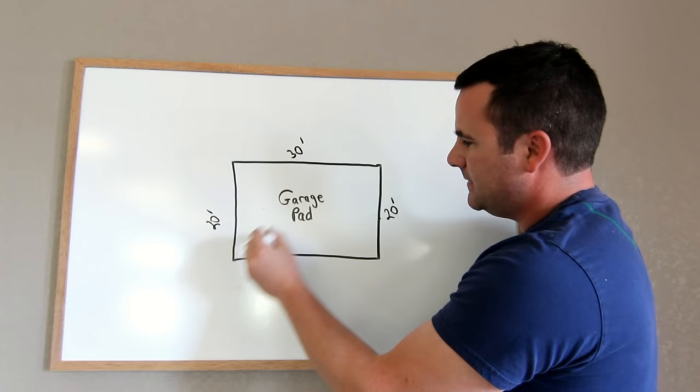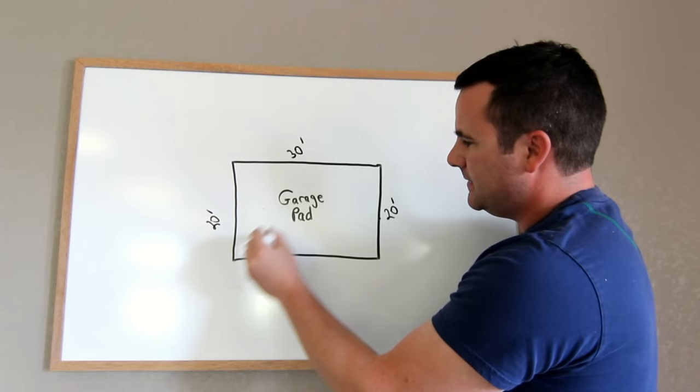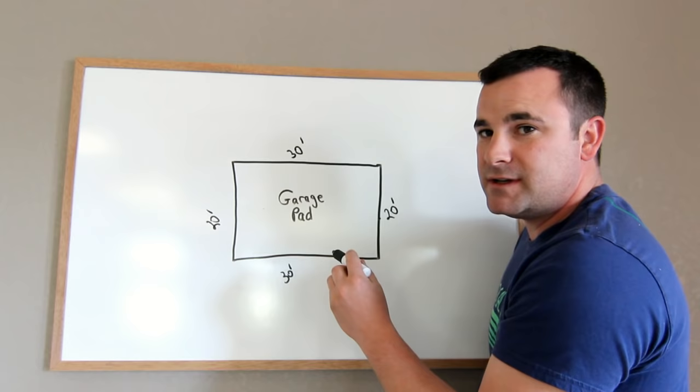In order so that when you measure diagonally and diagonally, if your diagonal measurements both equal the same, and these measurements all line up, that makes this building square.